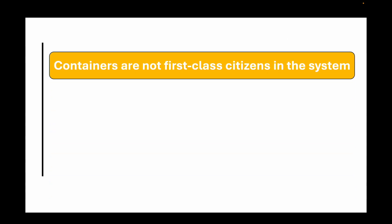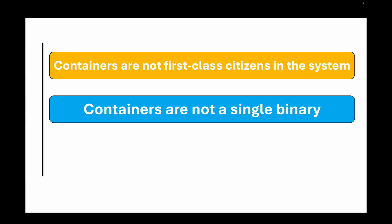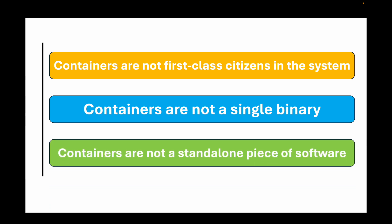A very crucial point when we talk about containers is that they are not first-class citizens in the system. They are not a single binary or a standalone piece of software, and that is one of the main differences when we compare a container with a virtual machine. A virtual machine is a first-class concept, whereas containers are not.